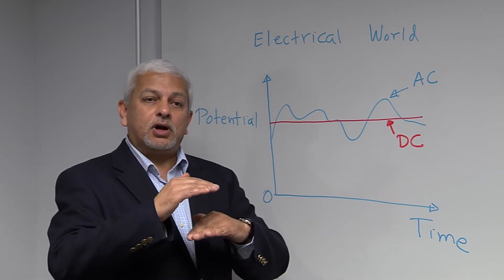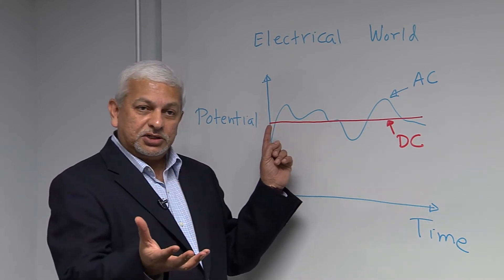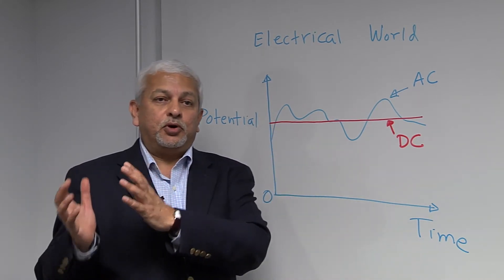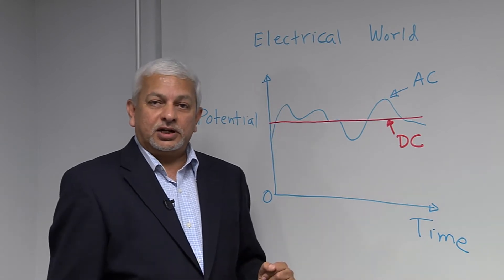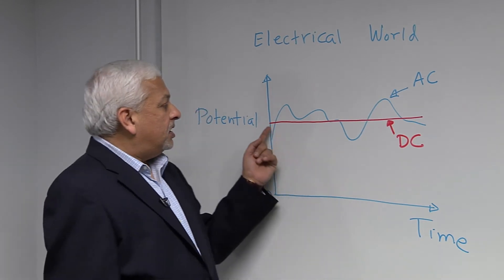But whether it is digital or analog, the fact of the matter is if I want to convey information or carry information from point A to point B using electrical signals, then there has to be variation as a function of time.